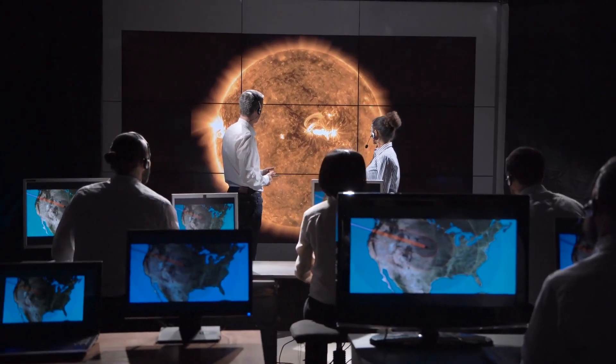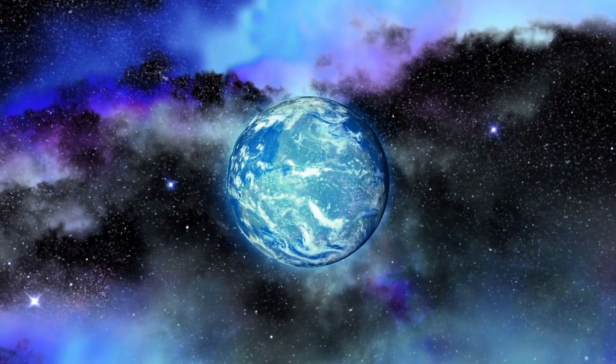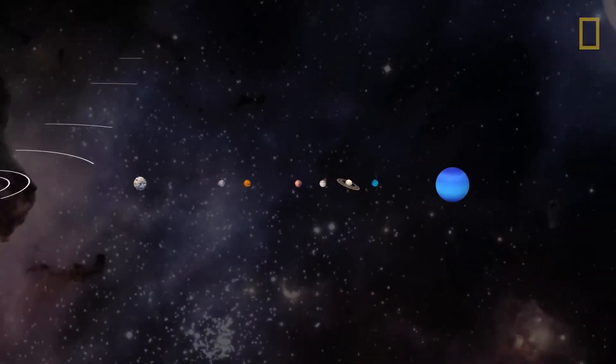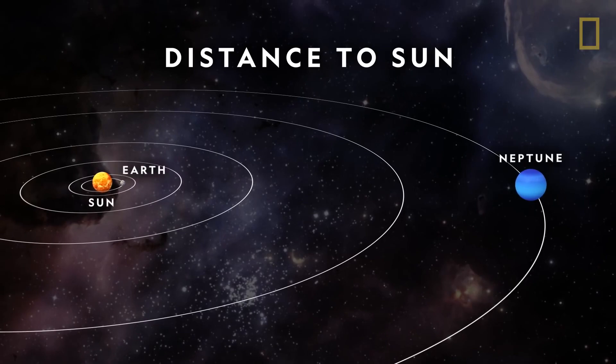Neptune has captivated scientists' attention since its discovery in 1846. Neptune is 30 times as far from the sun as Earth and orbits in a distant, dark region of the solar system.